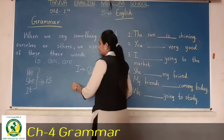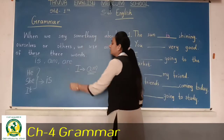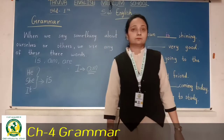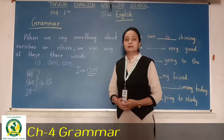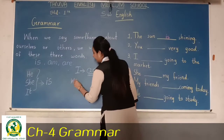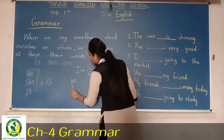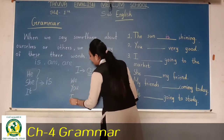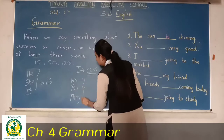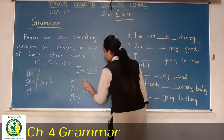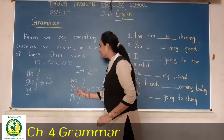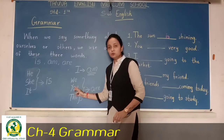And when we say 'are' — we, you, they. We add 'are' for we, you, and they. Note that 'you' is not plural but when we say 'you are', we still use 'are'.